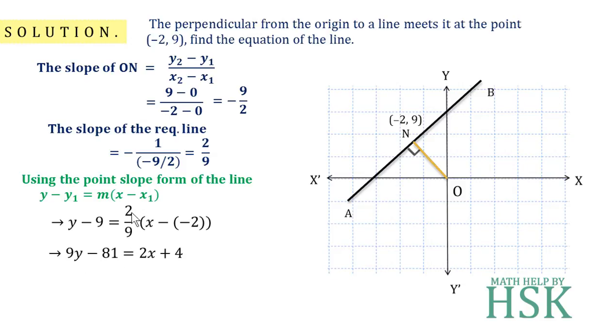on cross multiplication and multiplying 2 in this bracket, I get 9y minus 81 is equal to 2x plus 4. This 81 goes here, so I get, and 9y also comes here, and on rearranging I get 2x minus 9y plus 85 is equal to 0, which is my required answer. So this is how I am going to solve this question.